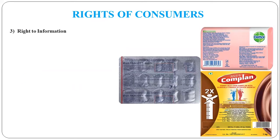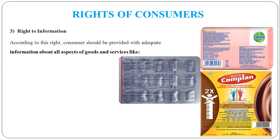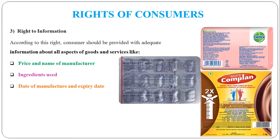Next is the right to information. Right to information means that the customer needs to be provided all the information. What is the price of the product? Who is the manufacturer? What are the ingredients used in the product? What are the materials used to create it? The date of manufacturing and expiry date should be available on every product. The user manual — meaning how to use the product — should also be provided. Safety instructions should also be included.